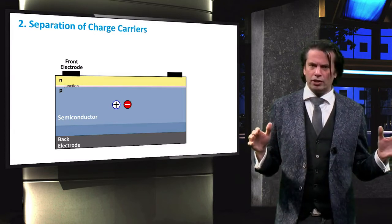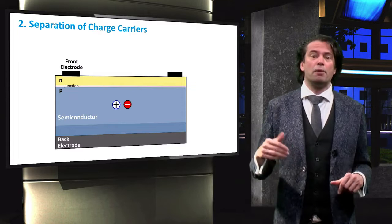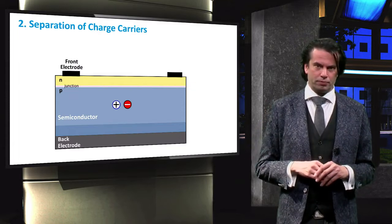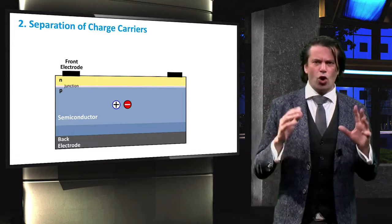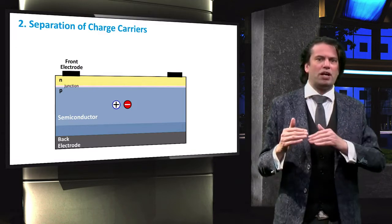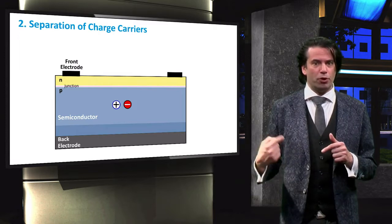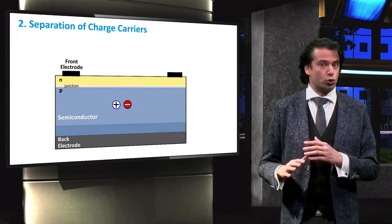In our solar cell here, the charges were generated in the P-type semiconductor. As you will learn in later videos, the P-n junction at the top of the solar cell only allows electrons to pass through and the junction at the bottom of the cell only allows holes to pass through.